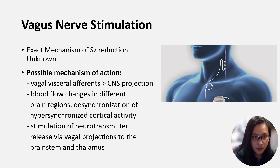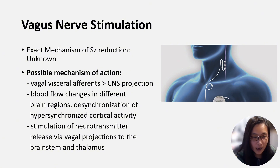Considering neuromodulation methods, VNS is the first approved and most commonly used device to date. The mechanism of action of VNS is that vagal afferents have diffuse CNS projections, and activation of these pathways broadly affects neural excitability.